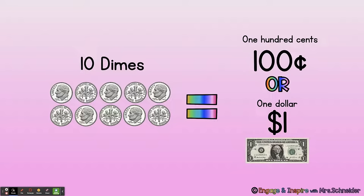Let's see how much ten dimes equals. Ten dimes: ten, twenty, thirty, forty, fifty, sixty, seventy, eighty, ninety, one hundred cents — or one dollar. So if you find ten dimes, you can trade it in for a dollar bill.